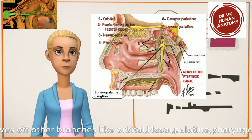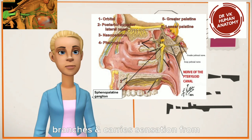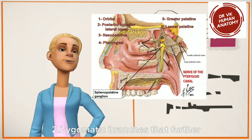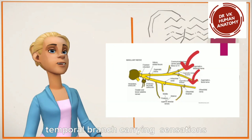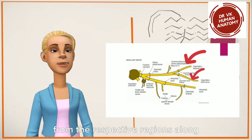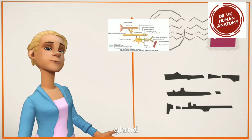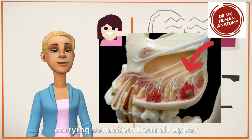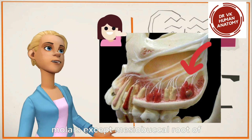The ganglionic branches include orbital, nasal, palatine, and pharyngeal branches, carrying sensation from the concerned areas. Two — zygomatic branch, which gives off zygomaticofacial and zygomaticotemporal branches carrying sensations from respective regions, along with secretomotor fibers to the lacrimal gland. Three — posterior superior alveolar branch, carrying sensation from all upper molars except the mesiobuccal root of the first molar.